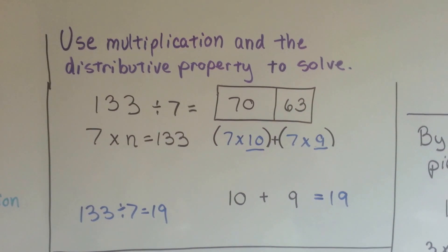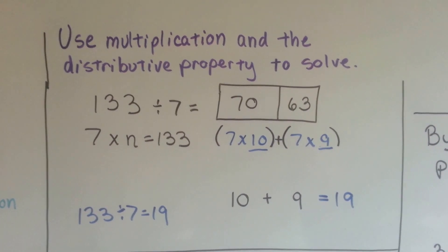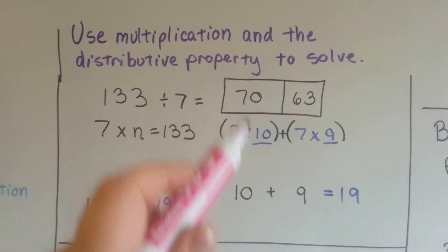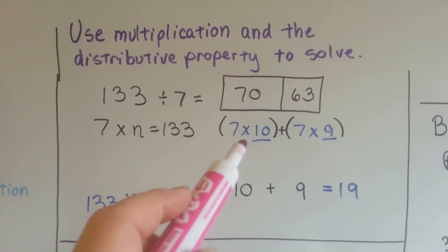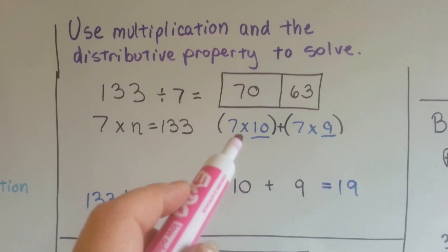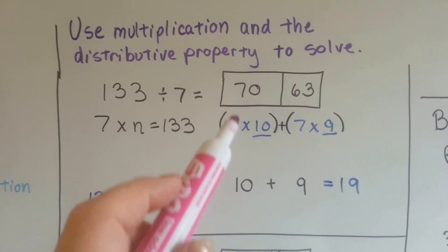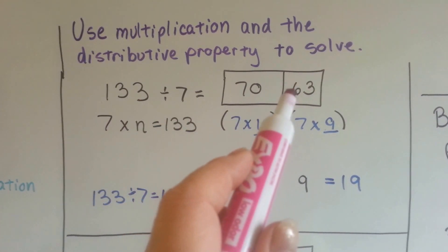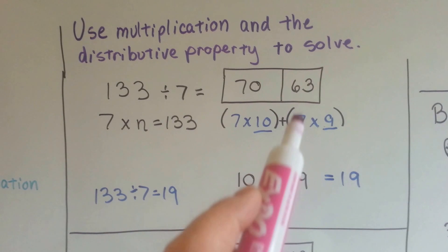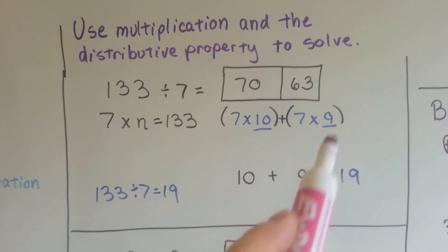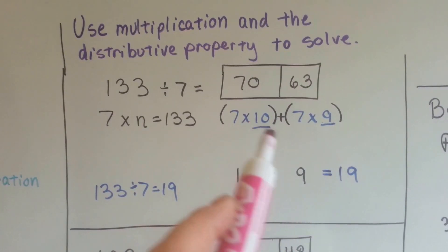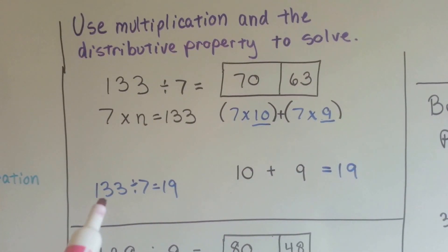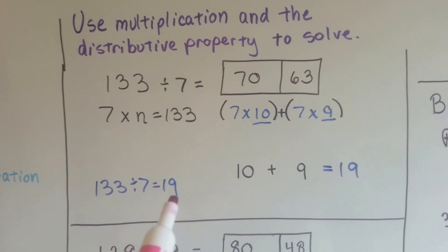We can use multiplication and the distributive property to solve division problems. For 133 divided by 7, I'm going to use the 10 times table because that's really fast and everyone knows their 10 times table. 7 times 10 is 70. 70 from 133 leaves 63 left over. 7 times what is 63? 7 times 9. So I take the 10 and the 9 as the addends, put them together, and I've got 19. So 133 divided by 7 is equal to 19.